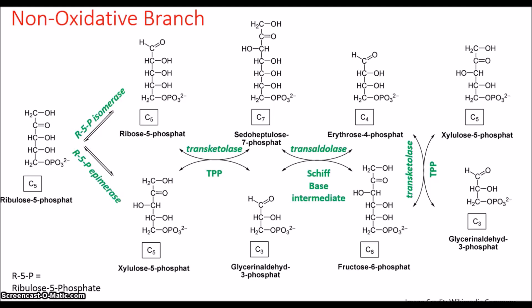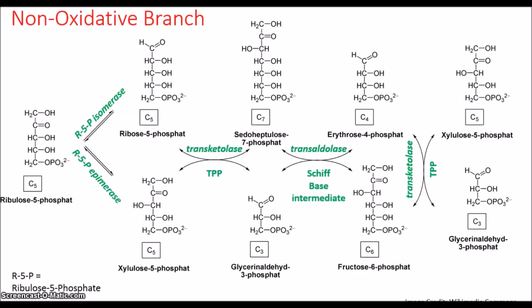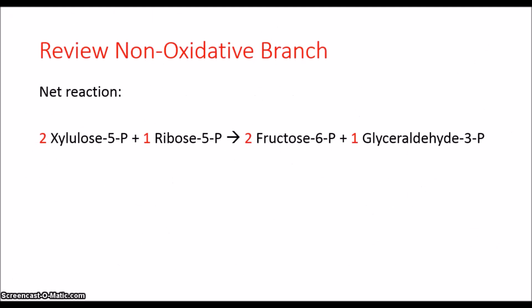To review the non-oxidative branch: two xylose 5-phosphates and one ribose 5-phosphate produce two fructose 6-phosphate and one grisoldahyte 3-phosphate. These two metabolites are linked to glycolysis, and that's going to have big implications which I'll get to shortly.